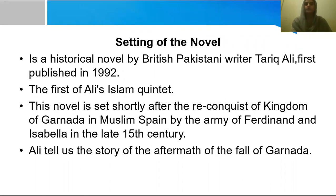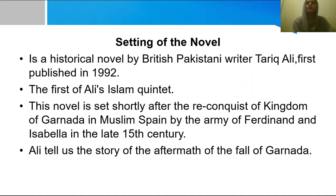Next is the settings of the novel. Shadows of the Pomegranate Tree is a historical novel where British Pakistani writer Tariq Ali first published in 1992. It is the first of Ali's Islam Quintet series — a five part series about the history of the clash between Islamic and Christian empires. This novel is set shortly after the reconquest of the Kingdom of Granada in Muslim Spain by the army of Ferdinand and Isabel in the late 15th century. Ali tells us the story of the aftermath of the fall of Granada by narrating a family's series of those who tried to survive after the collapse of their world.